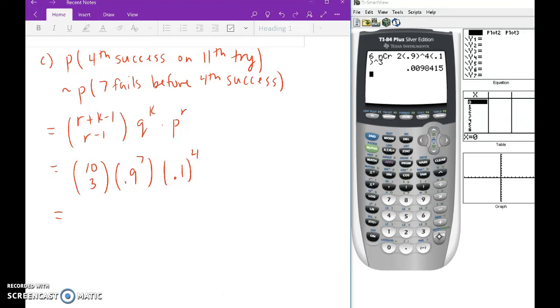All right, so let's go ahead and type this in the calculator and grab the answer. So 10 choose 3, times 0.9 to the 7th, times 0.1 to the 4th. 0.0057, all right.